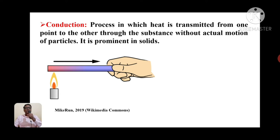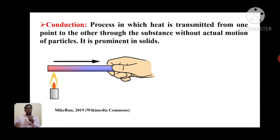Here we have seen heat transmitted without actual motion of particles. The particles of that rod do not carry heat by actual motion. The particles at the flame end receive heat from the flame and become hot. They vibrate at their mean position, and this vibratory motion transfers heat from one particle to the neighboring particle. That particle then conveys heat to the next neighboring particle, so heat flows from hot end to cold end without actual motion of particles — but particles vibrate at their mean position and convey heat to neighboring particles. So this is an example of conduction.